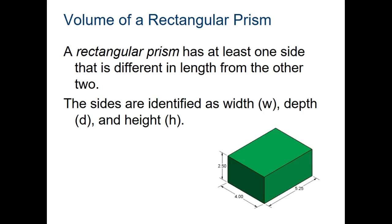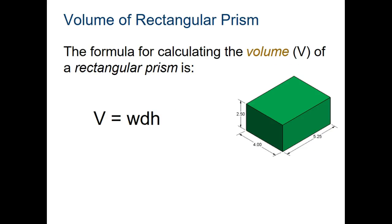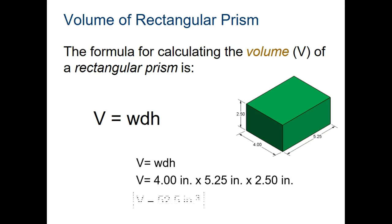Rectangular prisms — most of you know about this as well. This is like if you're calculating the volume of a box. You have width, depth, and height, and you multiply all three of those. The product of those is your volume. So volume equals width times depth times height. In this case, you can see the calculation gives you 52.5 cubic inches.